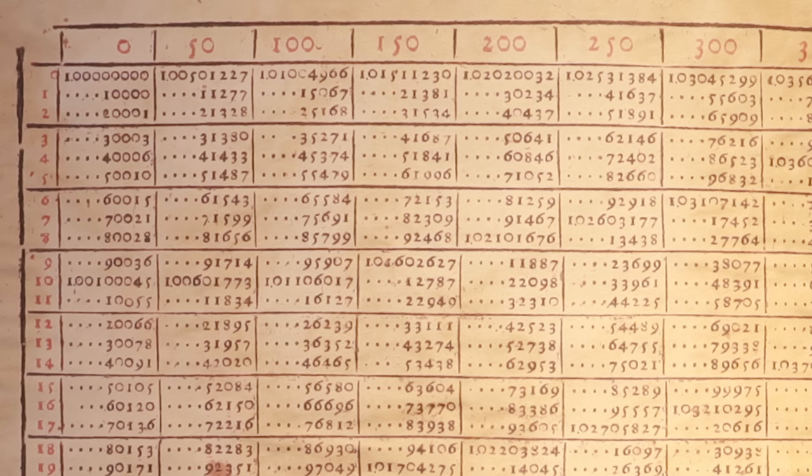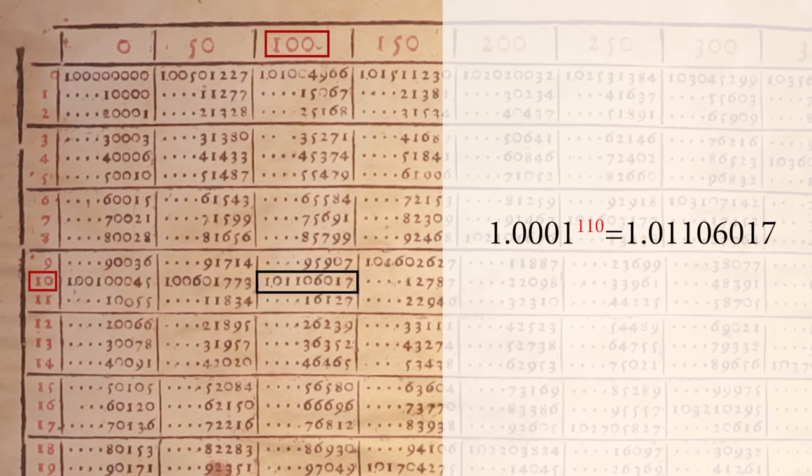For any given black number on Berge's table, we can get its red number by adding together the red numbers for its row and column. Berge used dots for the digits that don't change from row to row. The black number 1.01106017 has a red number of 100 plus 10 equals 110, which means that 1.0001 to the power of 110 equals 1.01106017.